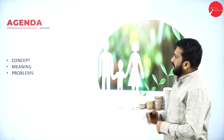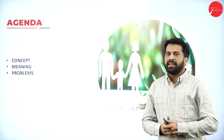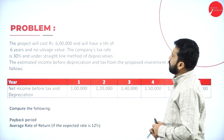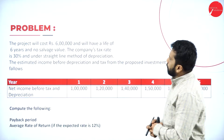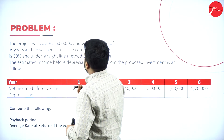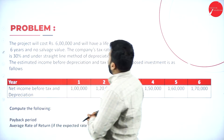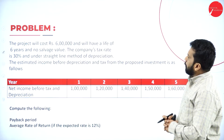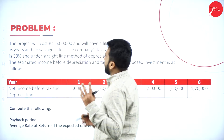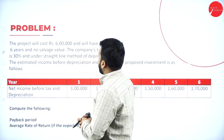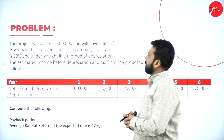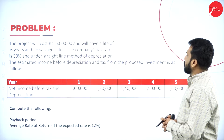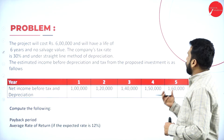So we'll go with the agenda — the concept, meaning, and then a problem. The project will cost Rs. 6 lakh, will have a life of 6 years, no salvage value. The company's tax rate is 30% under the straight-line method of depreciation. The estimated income is given before depreciation and taxation.